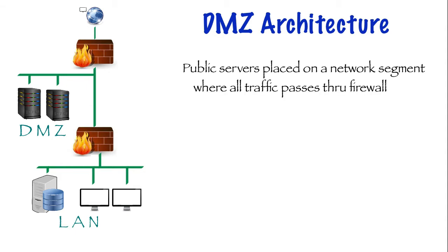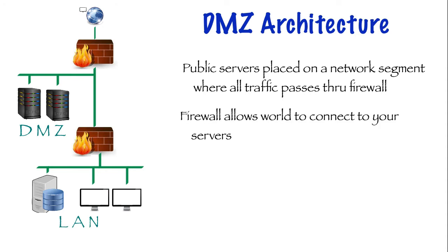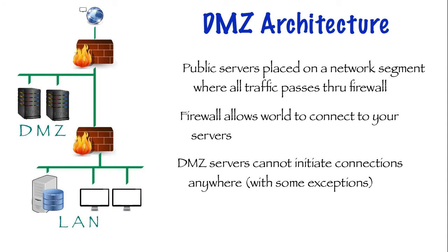The DMZ sits between two firewalls which provide isolation and protection for the trusted LAN. The first firewall only allows in unsolicited traffic that's destined for the DMZ. The DMZ servers are not allowed to initiate connections anywhere. This is a general goal, although in practice we will likely need to allow the DMZ servers to update their applications or operating system, and in some cases the DMZ server may need to send messages to a LAN server. A LAN to DMZ connection is allowed, as often a PC in the LAN is used to manage the DMZ server.